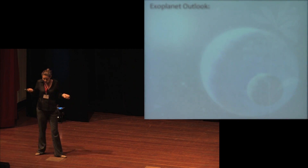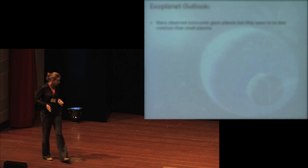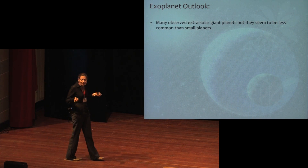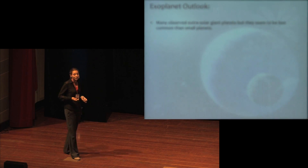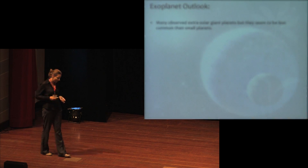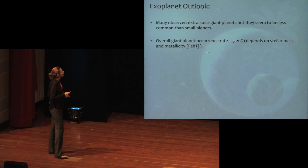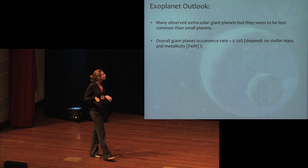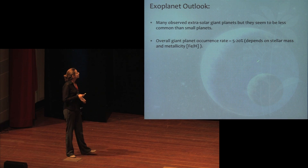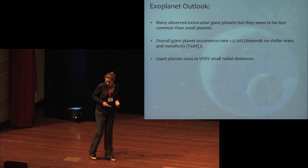This was the picture until approximately 1995. What did we learn from exoplanets? First, there are many observed exosolar giant planets, meaning giant planet formation must be relatively efficient, although they seem to be less common than low-mass or intermediate-mass planets. Giant planet occurrence rate is between 5 and 20 percent, and this range depends on stellar mass and stellar metallicity.